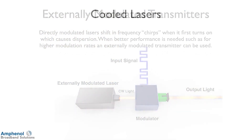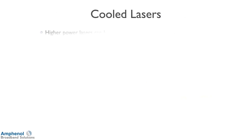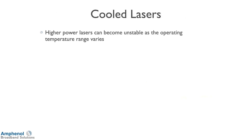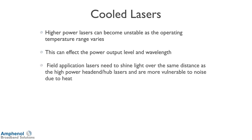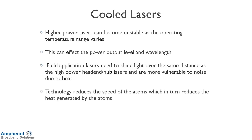There's also a thing called cool lasers. High-power lasers can become unstable as the operating temperature increases, which can affect the power output level and wavelength — it can actually drift. Head-end hub lasers are more prone to noise due to heat. As atoms heat up they move more, so the technology reduces the speed of the atoms, which in turn reduces the heat generated.